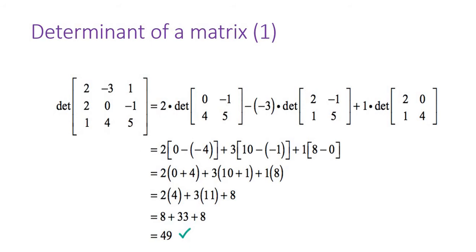First, the determinant of a matrix. So there is a matrix, and we want to calculate the determinant of that matrix. Let me take this particular matrix. I want to calculate the determinant manually. The first element is 2: 0 into 5 is 0, minus 4 into minus 1 is minus 4, so minus into minus gives plus 4.